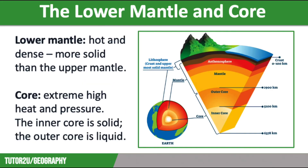Below this layer is the lower mantle, which is hotter and denser and much less ductile than the upper mantle. And then finally we have the core at the centre. The core is under a huge amount of pressure and is extremely hot. The inner core is solid, whereas the outer core is liquid.